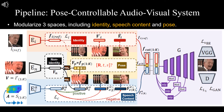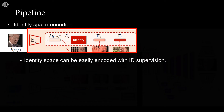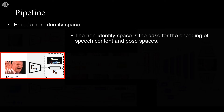Based on the discussions above, we design our post-controllable audiovisual system as shown here. Three latent spaces — namely the identity, speech content, and post space — are modularized. While the identity space can be easily encoded with ideal supervision, it is difficult for the others. Thus, we propose to encode a non-identity space for easier feature learning.